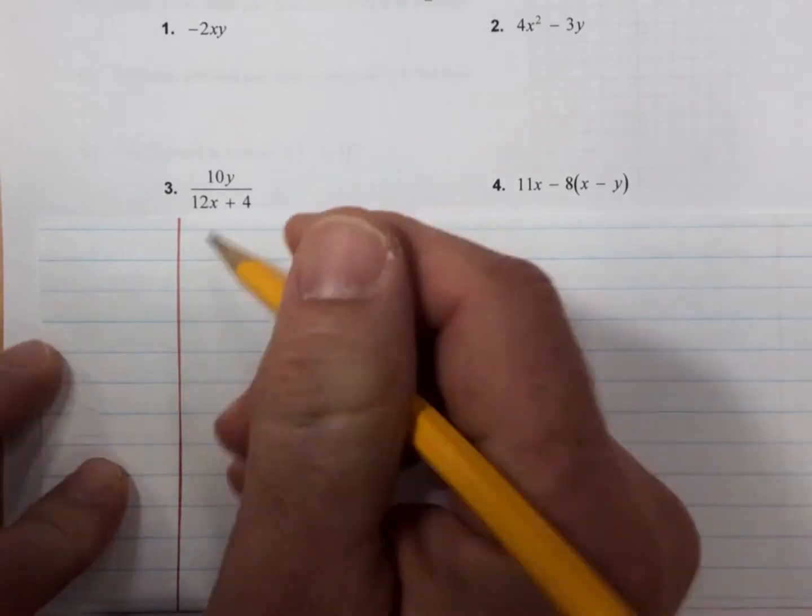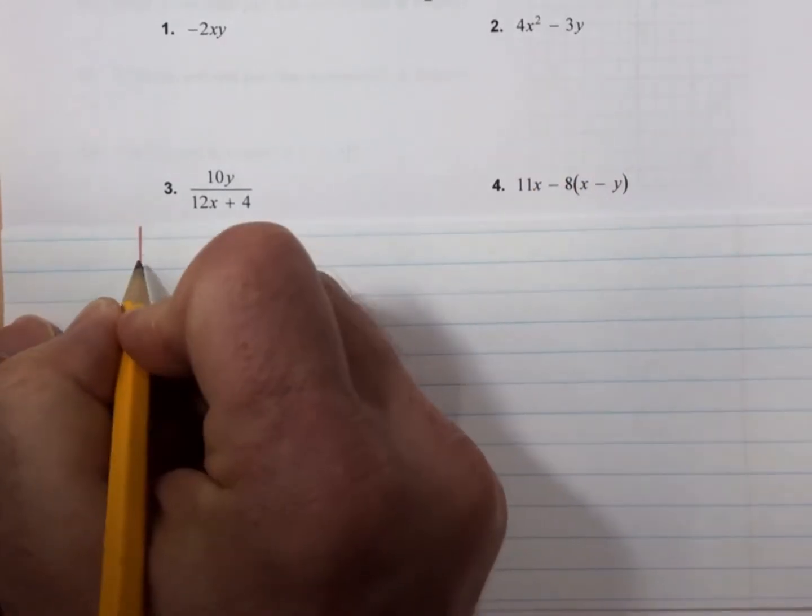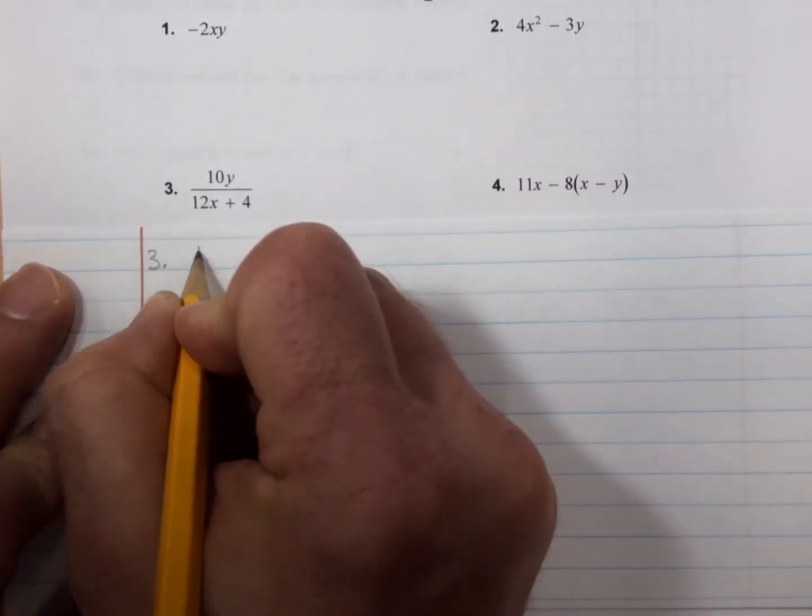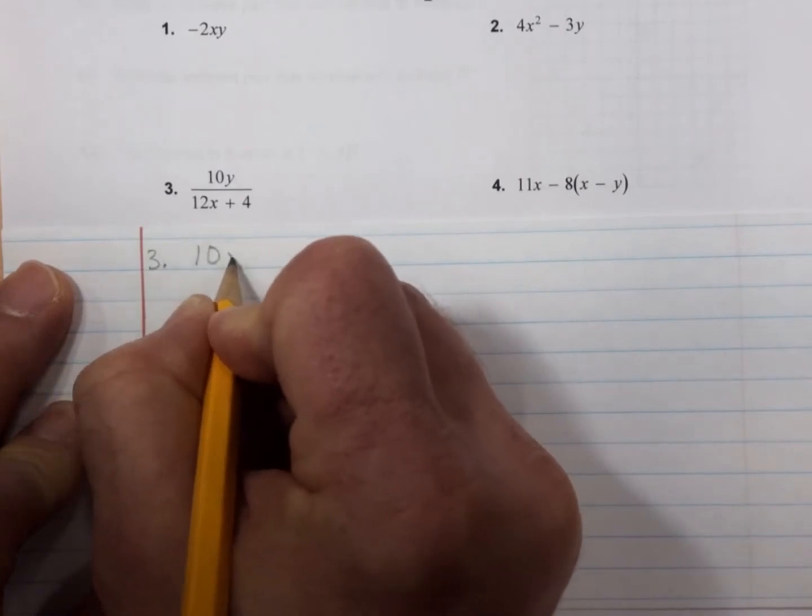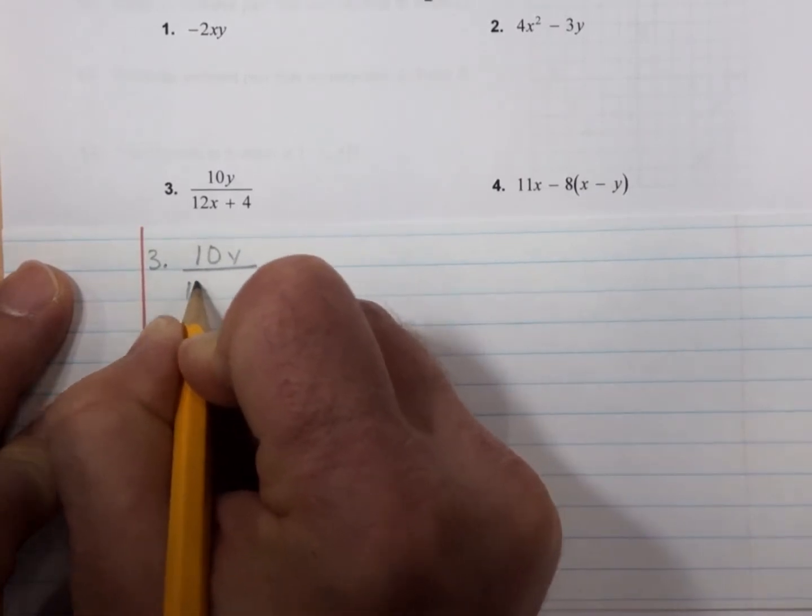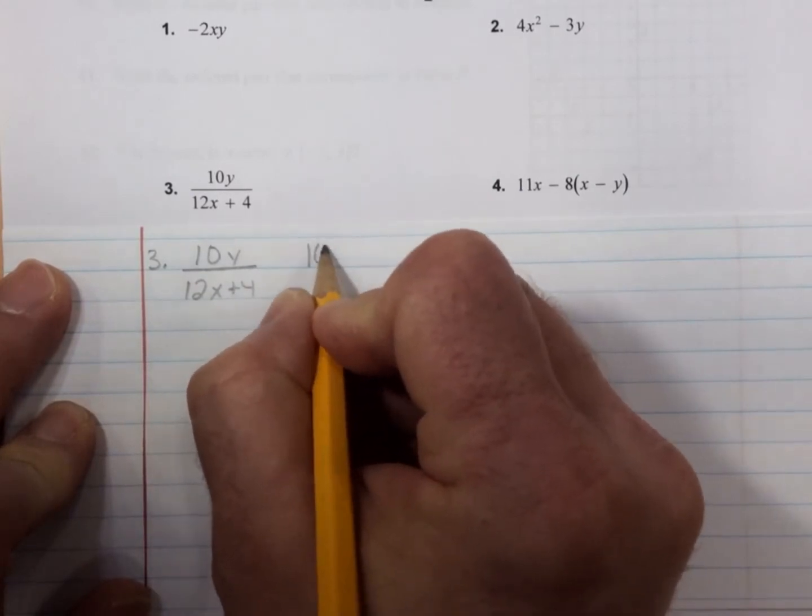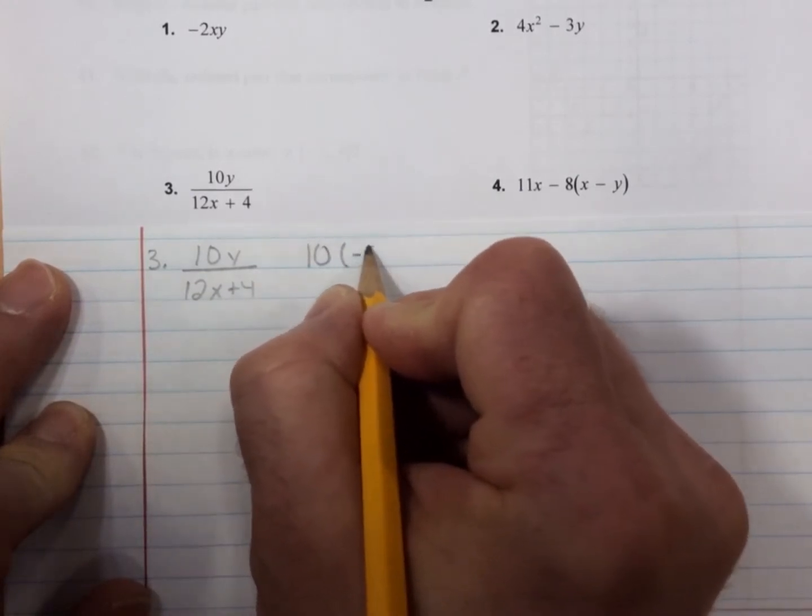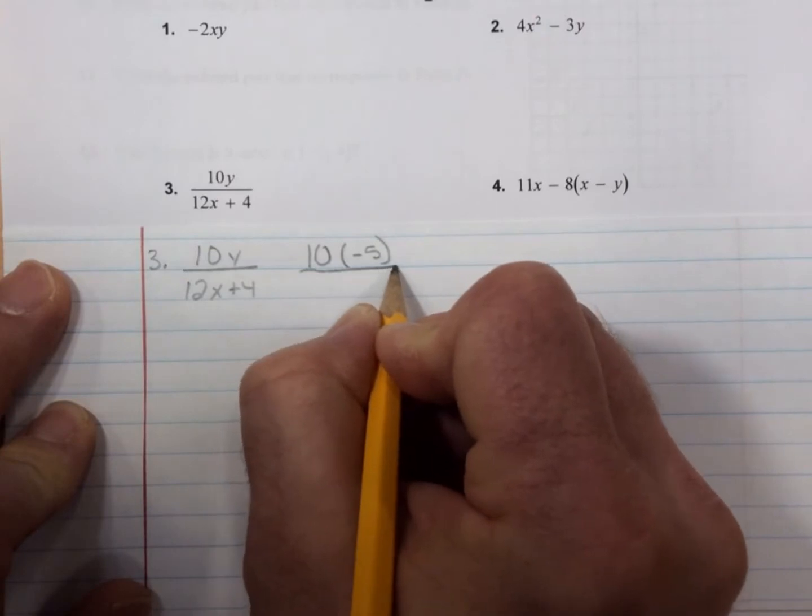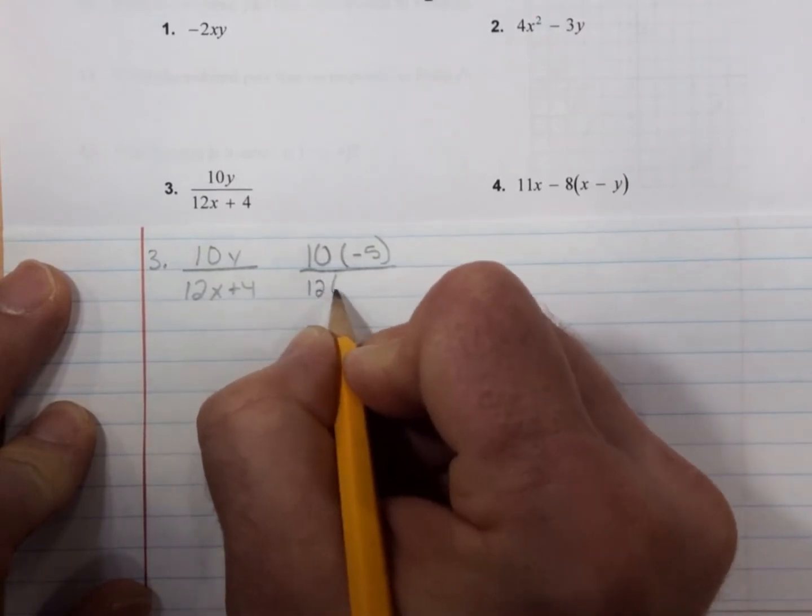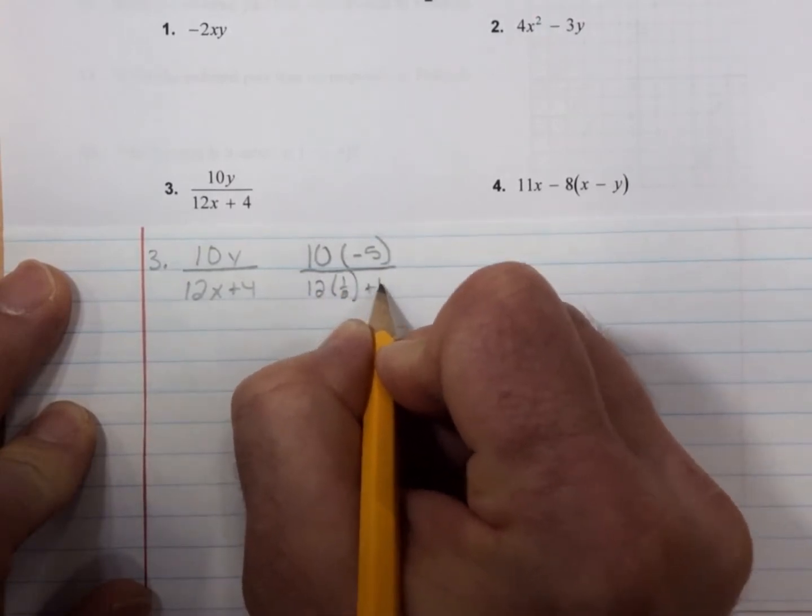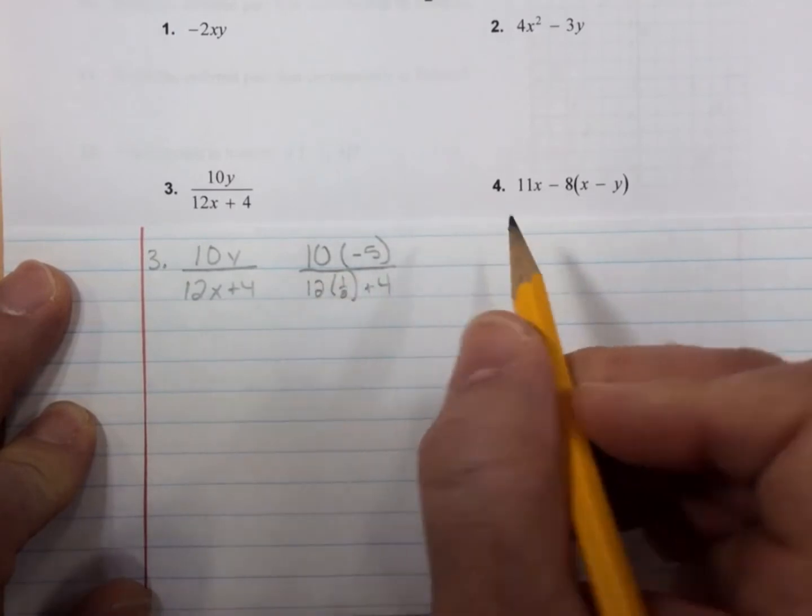Number 3. 10y over 12x + 4 is the same as 10 times -5 over 12 times 1/2 plus 4. Simplifying the top, we get -50.